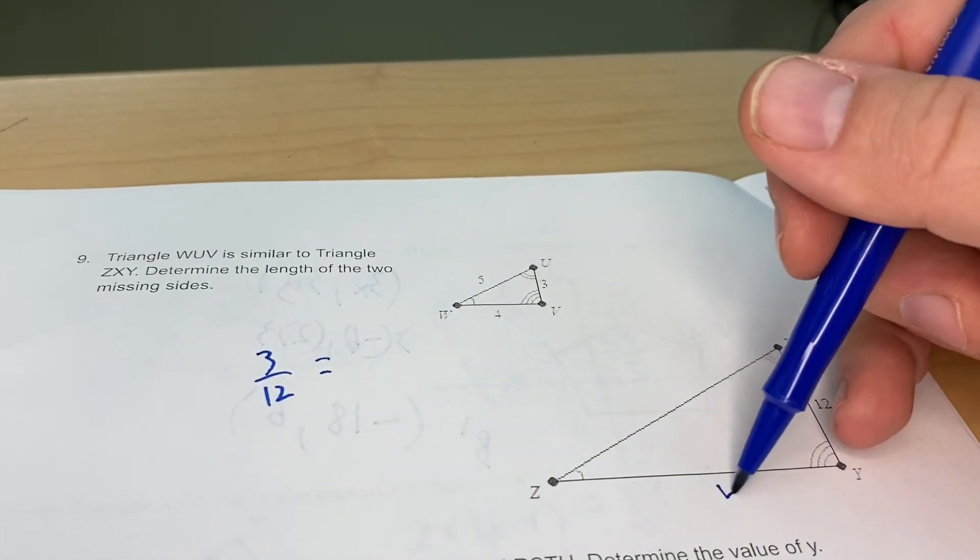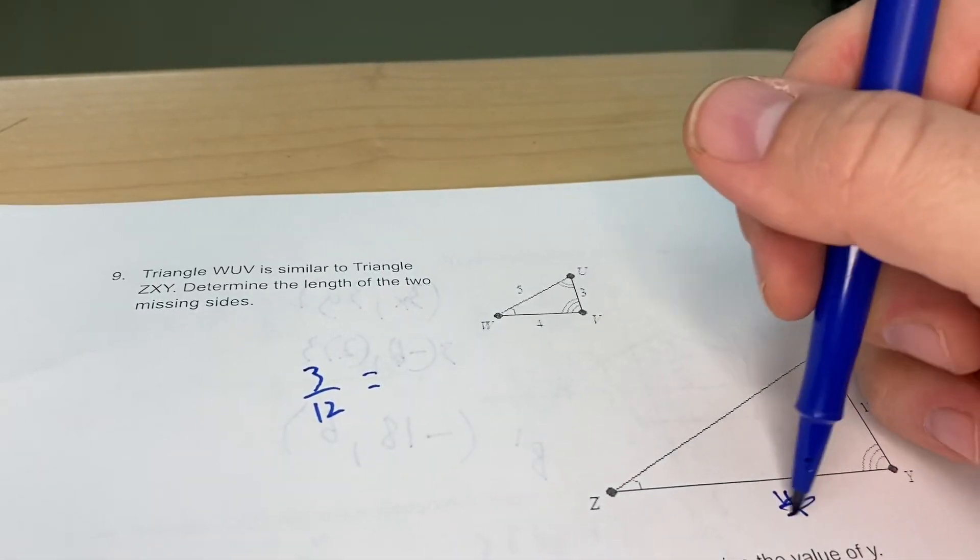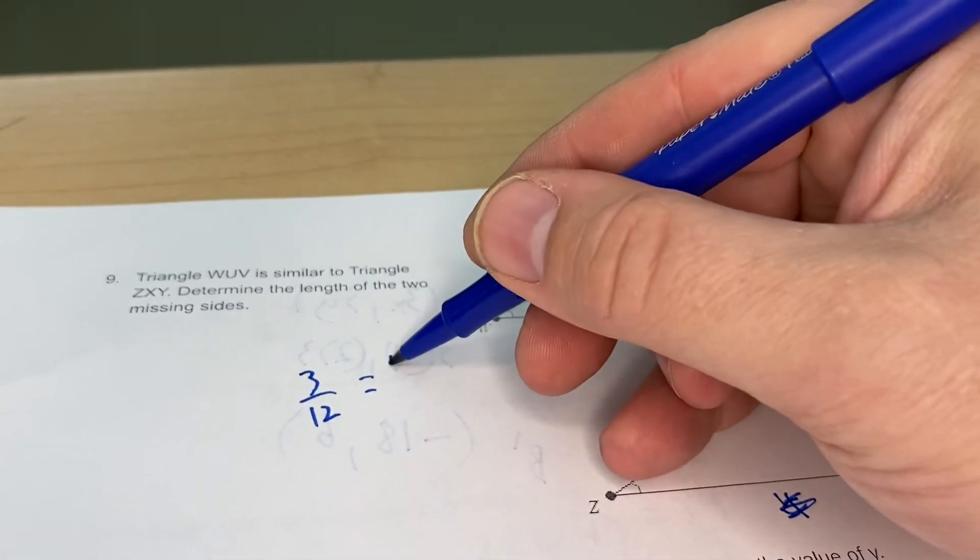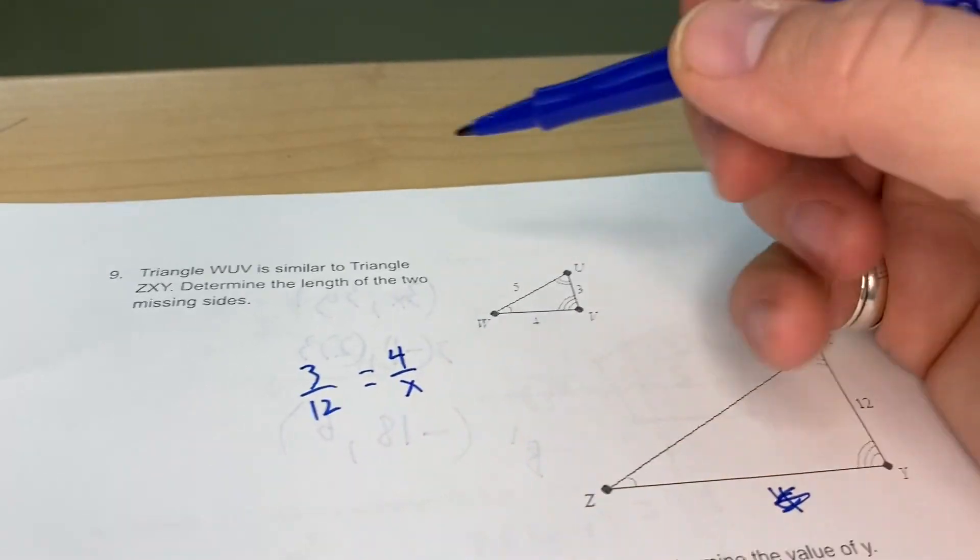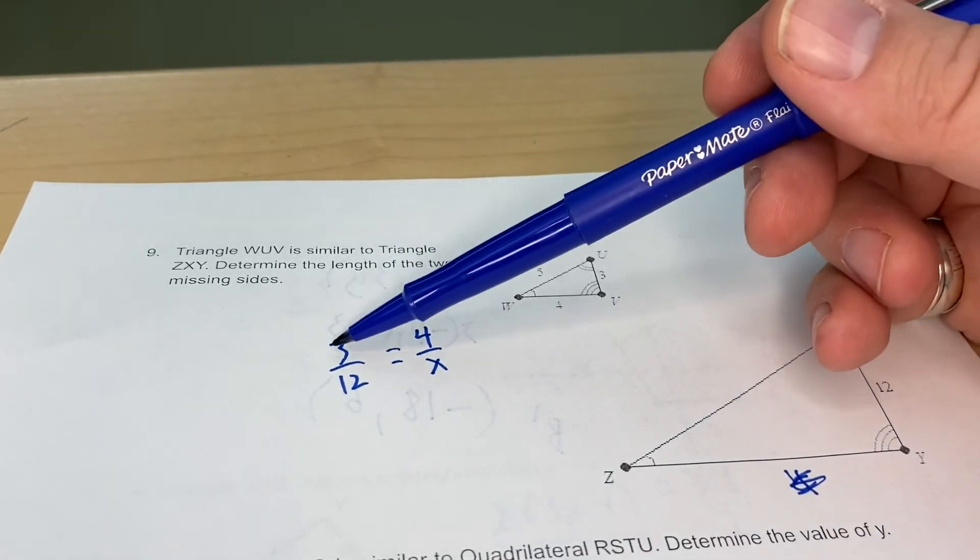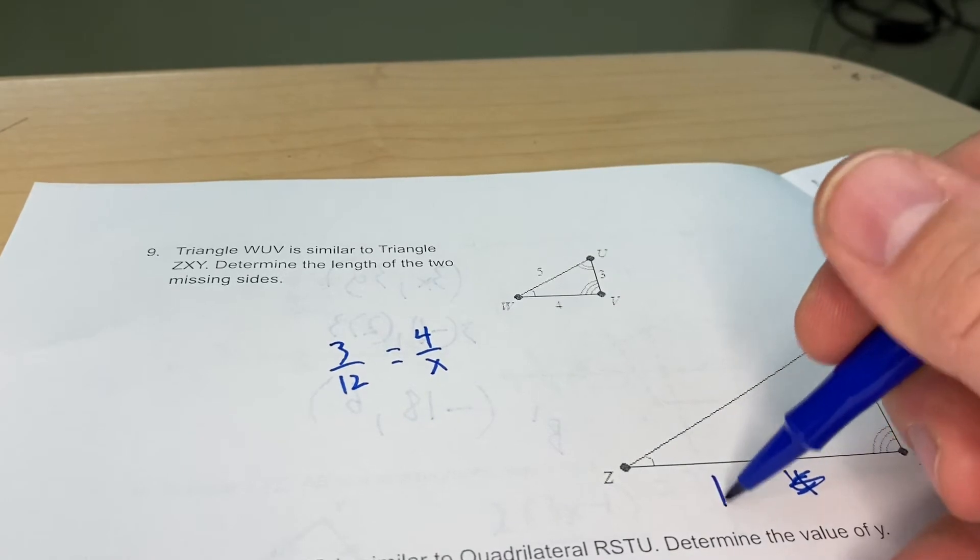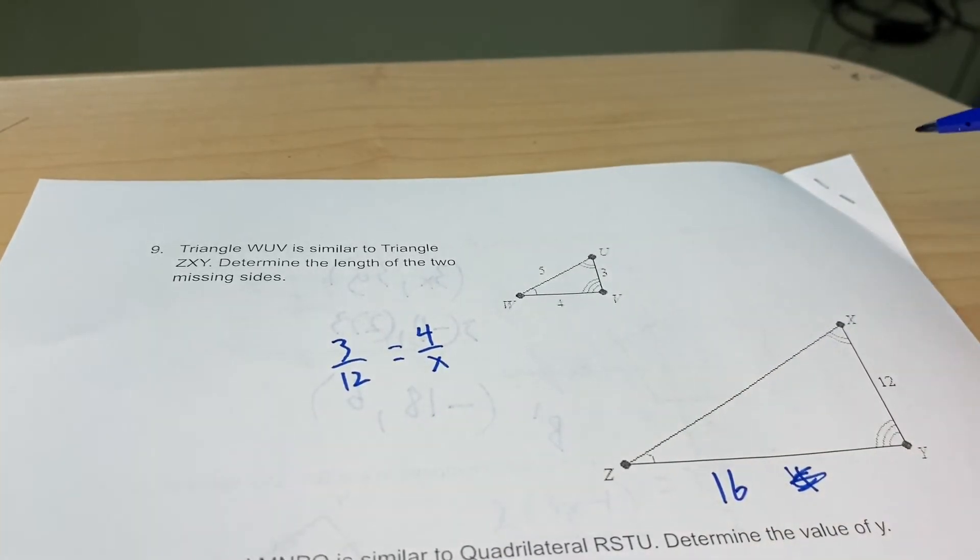3 is to 12 as, and I'll go ahead and do this side right here, 4. So 3 is to 12 as 4 is to x. I can kind of figure this out as a proportion here. 3 times 4 makes 12, so 4 times 4 means that this is going to be 16.